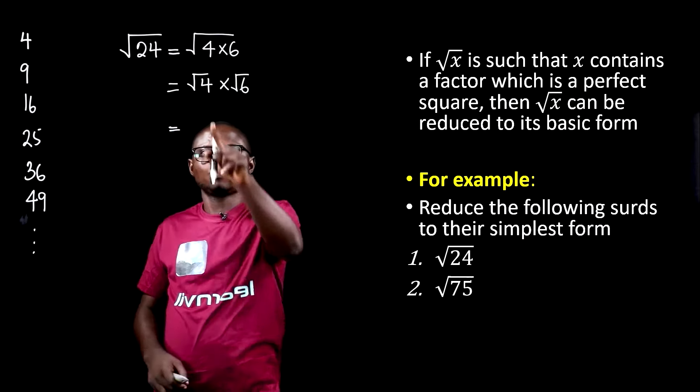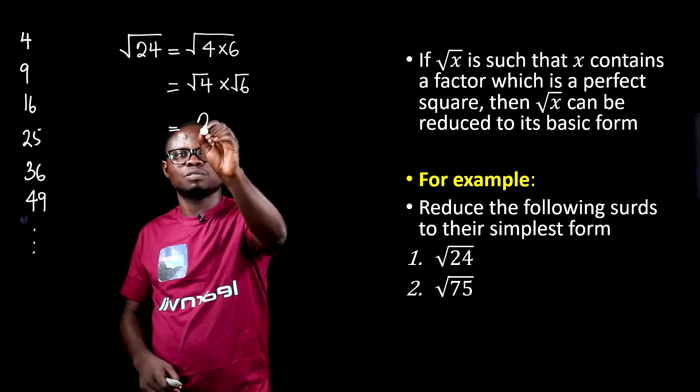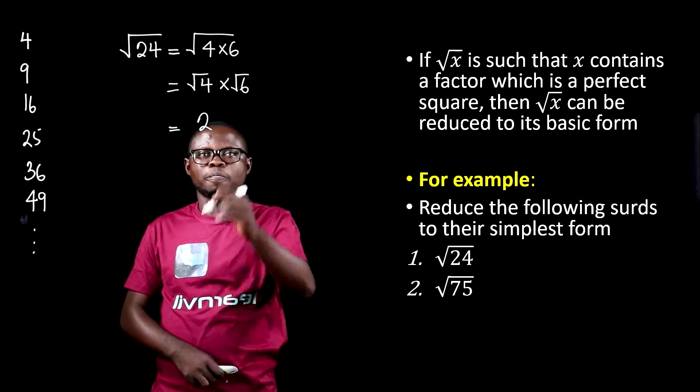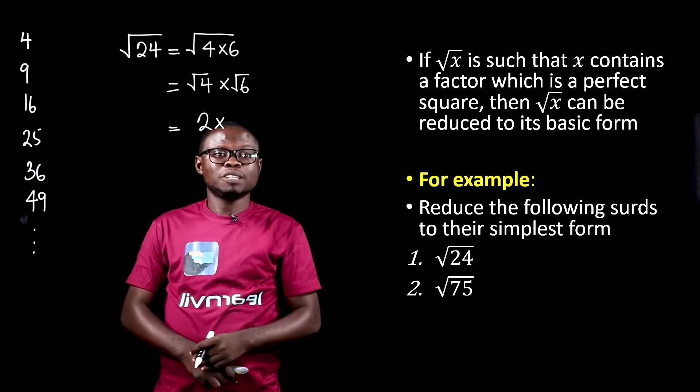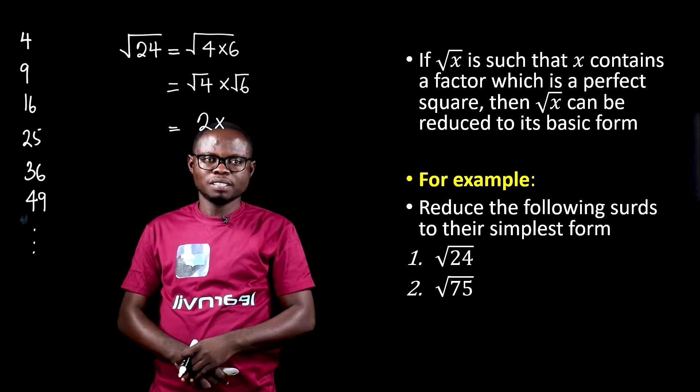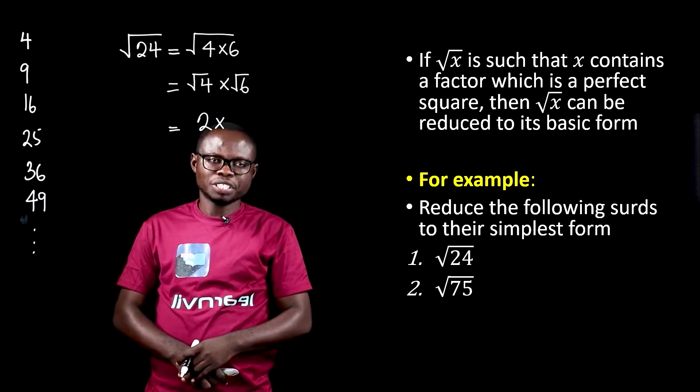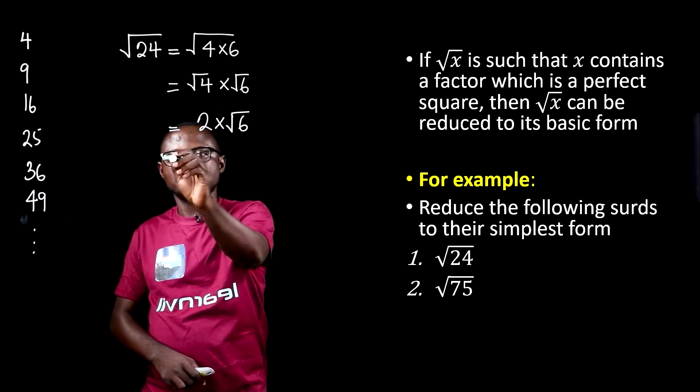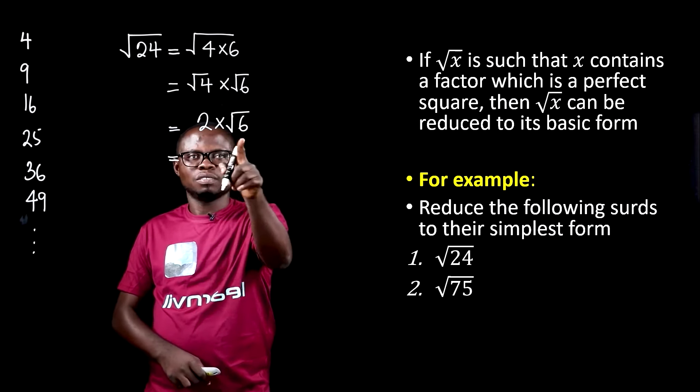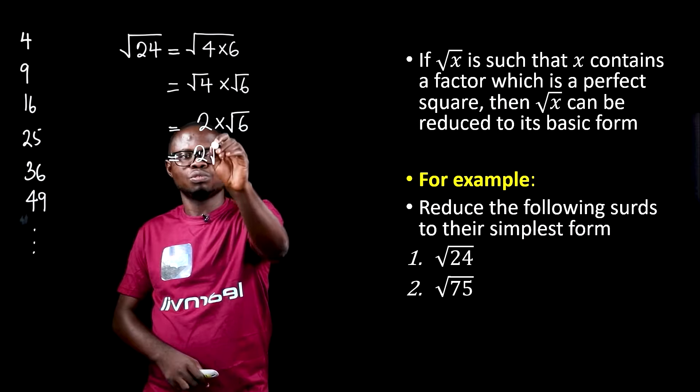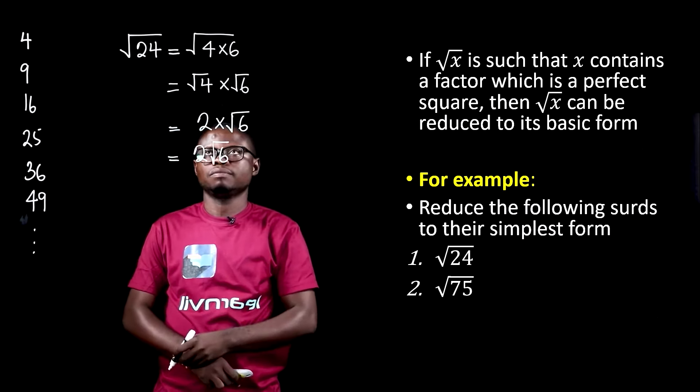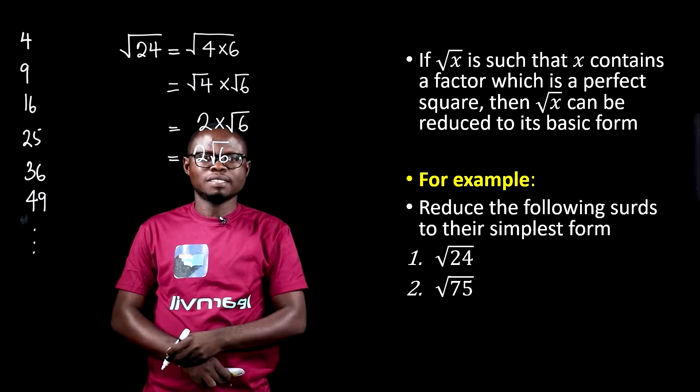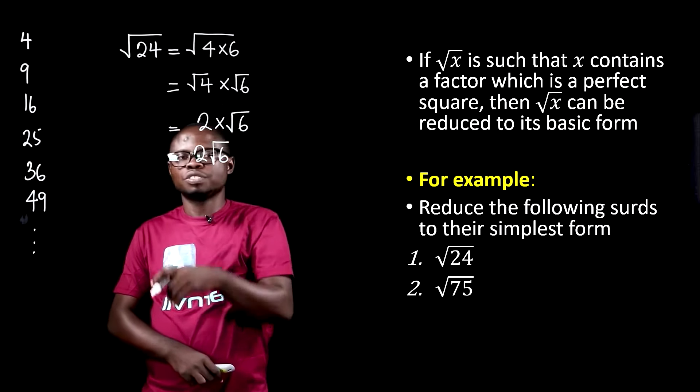Now, you know that the square root of 4 gives us 2, but the square root of 6 gives us an irrational decimal, so we'll keep it this way. Finally, this becomes 2 root 6, and that is the simplest form of root 24.